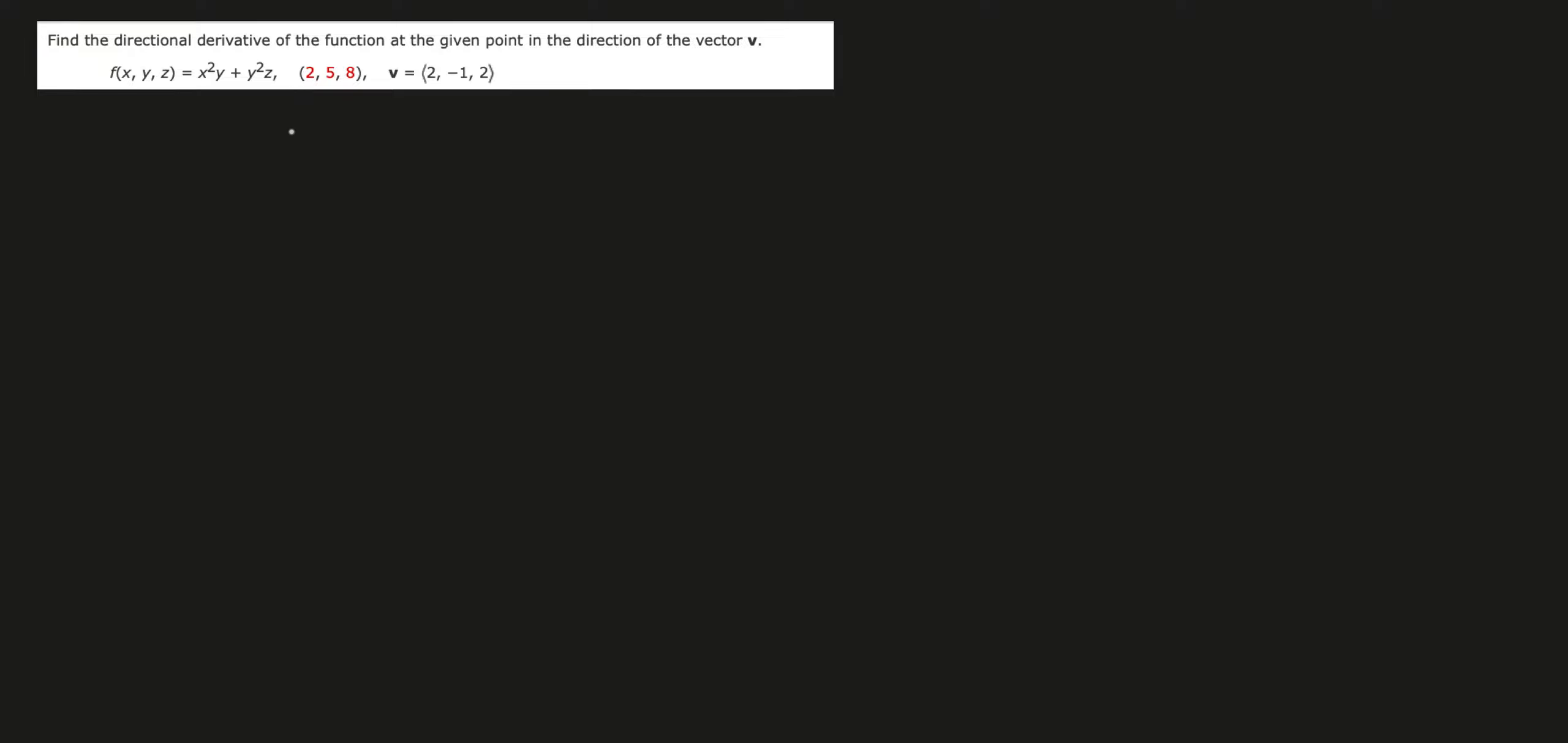Let's find the directional derivative of our function at the given point in the direction of our vector v. So we have our function f is equal to x squared y plus y squared z. The point is 2, 5, 8 and the vector v is 2, negative 1, 2.